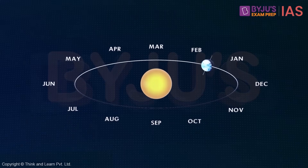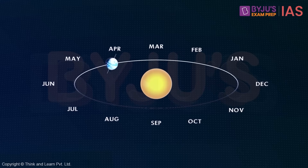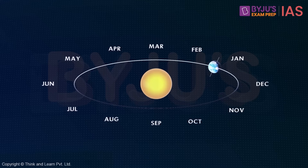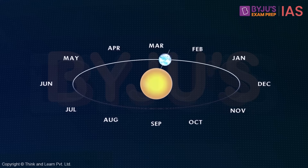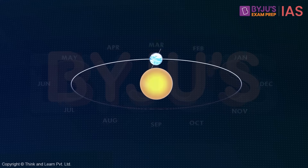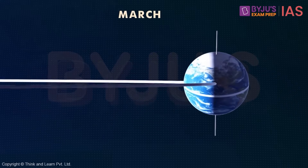The earth takes approximately 365 days to complete one revolution around the sun. Let's see the journey of the earth in one full year, starting with the month of January. After a journey of three months, that is around March, the earth reaches this position.